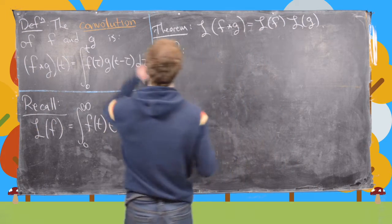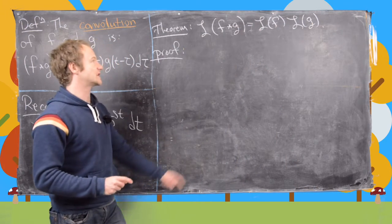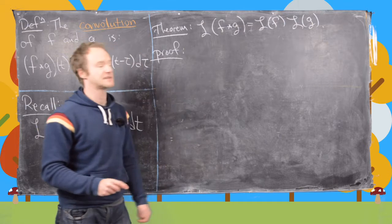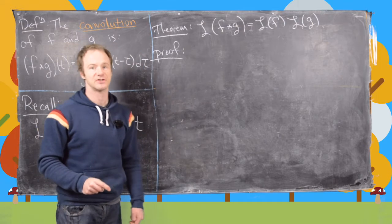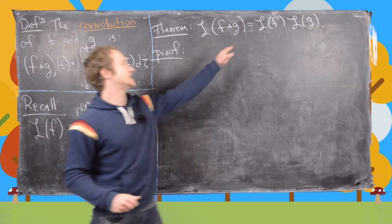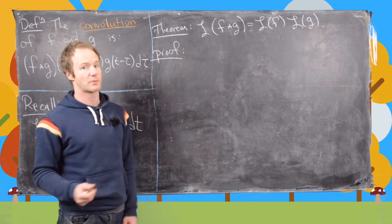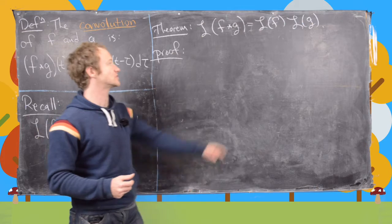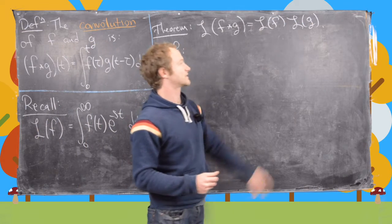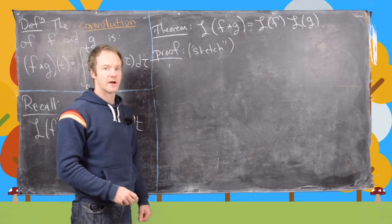The theorem we want to prove here is that the Laplace transform of the convolution of f and g — so f star g — is equal to the product of the Laplace transform of f times the Laplace transform of g.